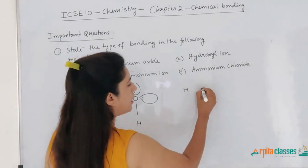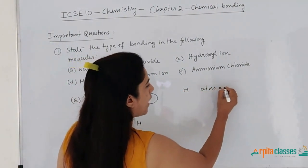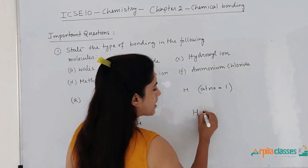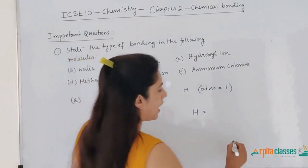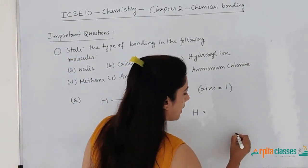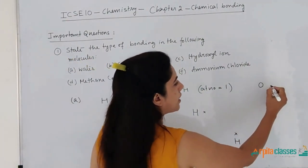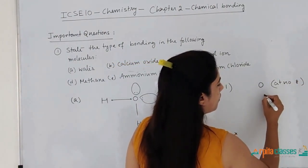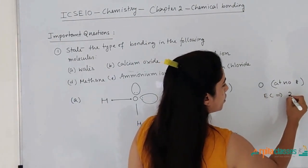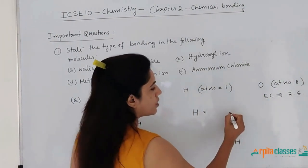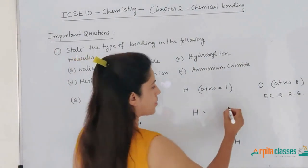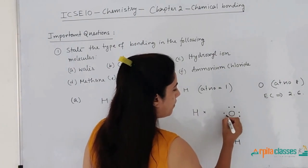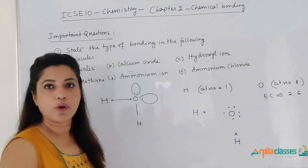Hydrogen's atomic number is 1, so hydrogen has only one electron in its outer shell. I am showing it by cross. Another hydrogen also shown by cross. Oxygen's atomic number is 8, so the electronic configuration of oxygen is 2, 6. Oxygen has 6 electrons in its outermost shell — I am showing the electrons of oxygen with dot: 1, 2, 3, 4, 5 and 6.